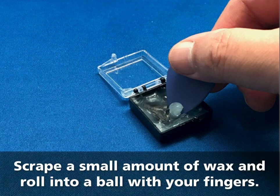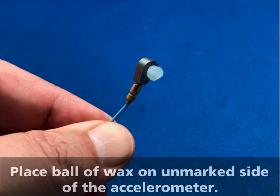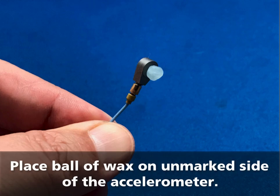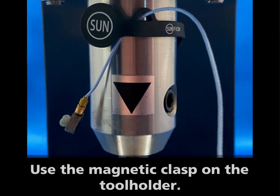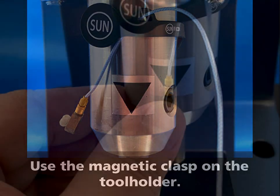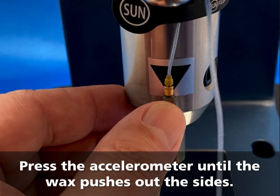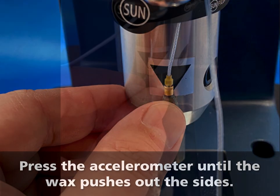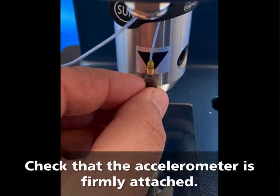Scrape a small amount of wax and roll it into a ball with your fingers. Place the ball of wax on the unmarked side of the accelerometer. Use the magnetic clasp on the tool holder to press the accelerometer until the wax pushes out the sides. Check that the accelerometer is firmly attached.